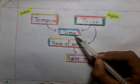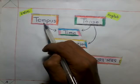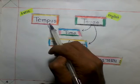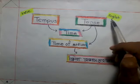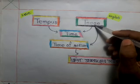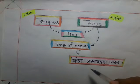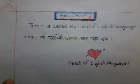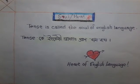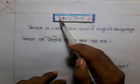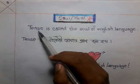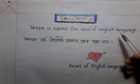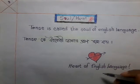Tense. Tense means time. Tense comes from the Latin word Tempus. Tense is called the soul of English language — tense is called the soul of English language, like this.